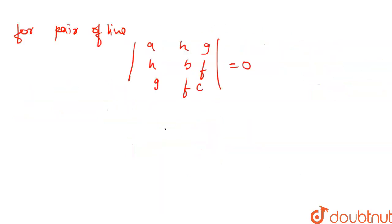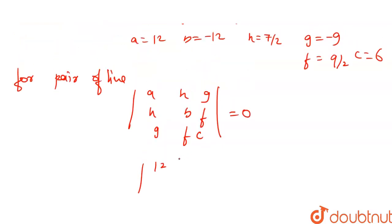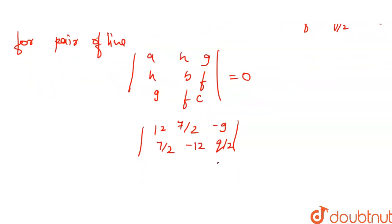So if we put these values: 12, 7 by 2, minus 9 in the first row; 7 by 2, minus 12, q by 2 in the second row; minus 9, q by 2, and 6 in the third row.